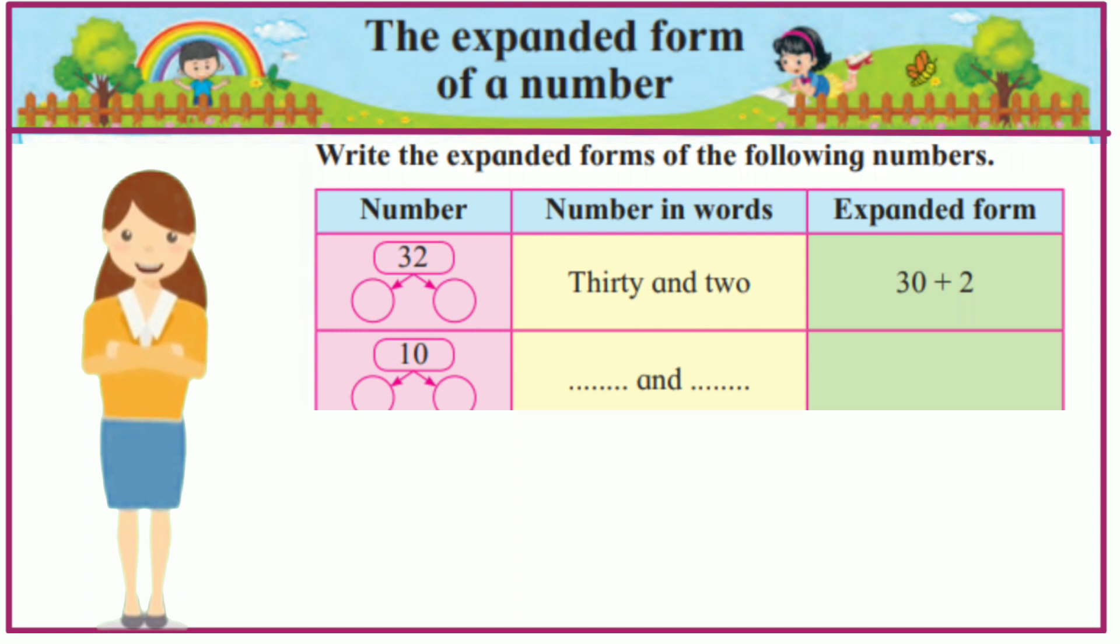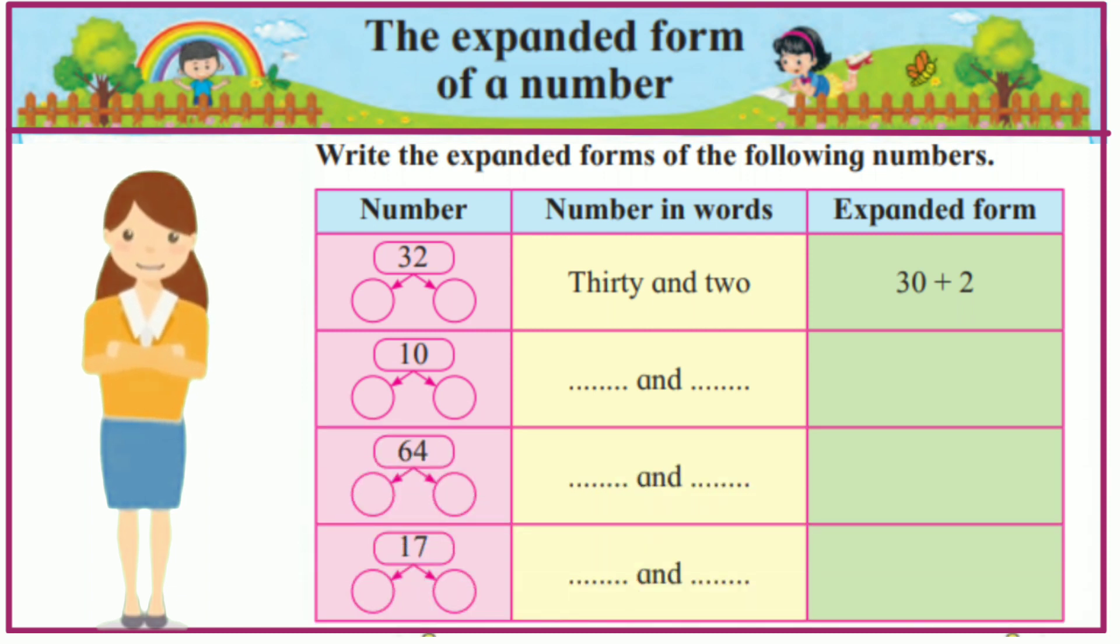Write the expanded forms of the following numbers. 32. 30 and 2. 30 plus 2. 10. 10 and 0. 10 plus 0.